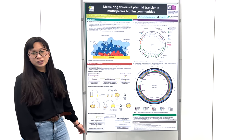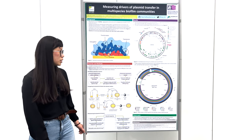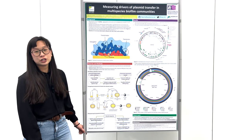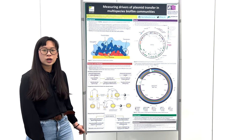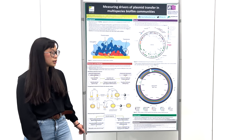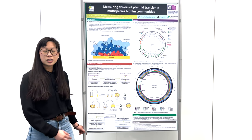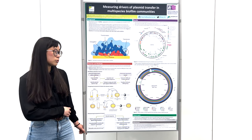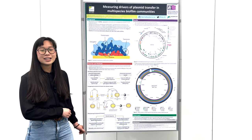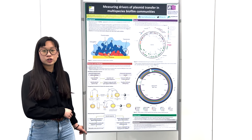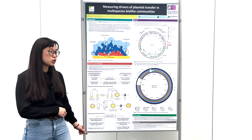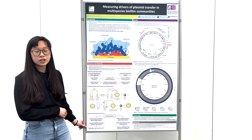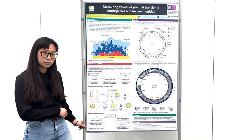To do this, I first established a model multispecies biofilm community using E. coli and Salmonella Typhimurium. And then I screened a panel of bacterial isolates for plasmids carrying clinically important AMR genes that can be used to meaningfully monitor HGT under various stressors.